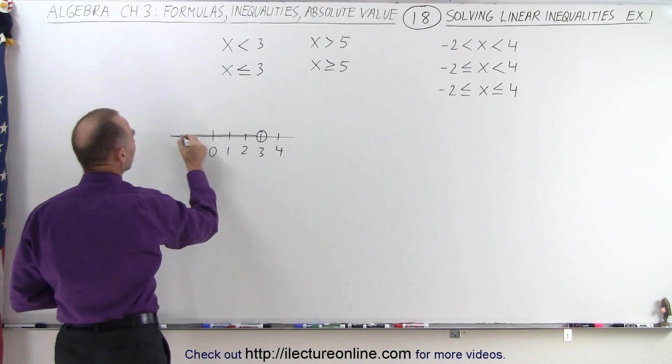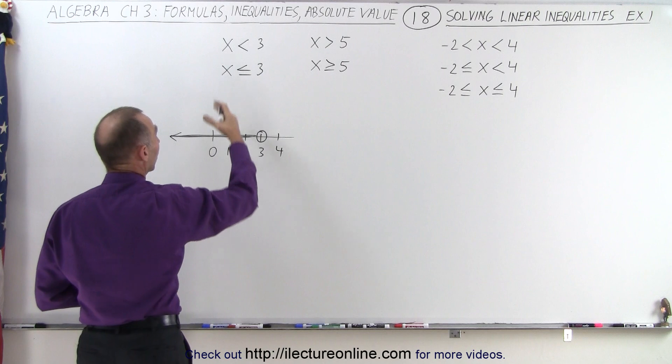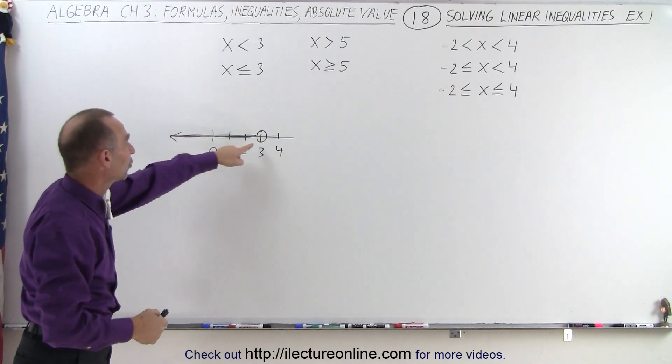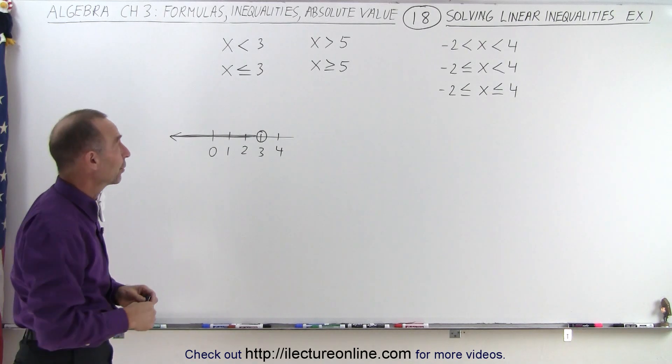This indicates that all the numbers to the left of positive 3 are the solution for that first inequality. We're looking for all x's that are smaller than 3, not including 3.